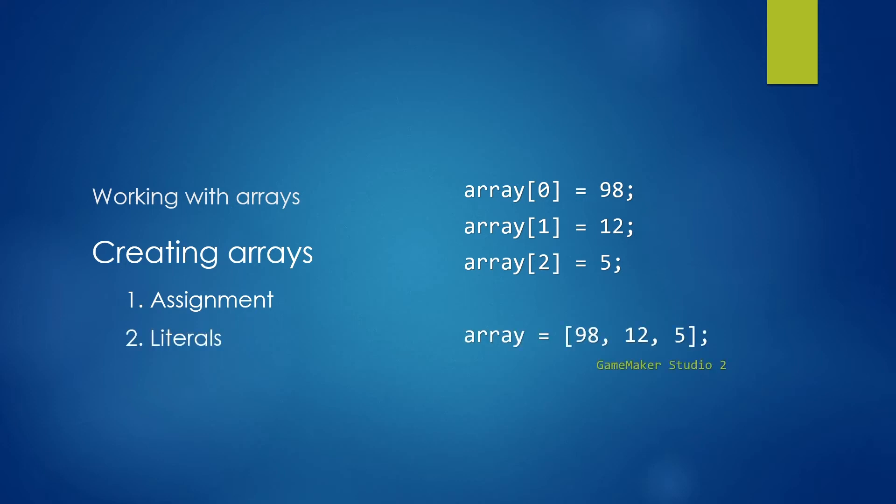The next way is to use array literals, which were introduced in GameMaker Studio 2. And you can use a square bracket notation followed by some values which help you create complex arrays in a single line.